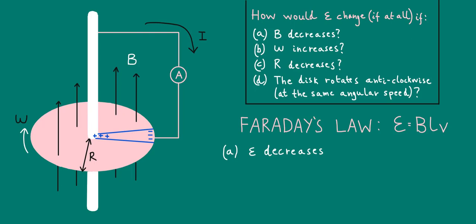For part B, if the angular speed increases, that means the linear speed of all the points on the disk will increase. So looking at Faraday's law, we see that E, the induced EMF, or rather epsilon, is proportional to V, which is really a linear speed. So if the angular speed increases, we'd expect the induced EMF to therefore increase as well.